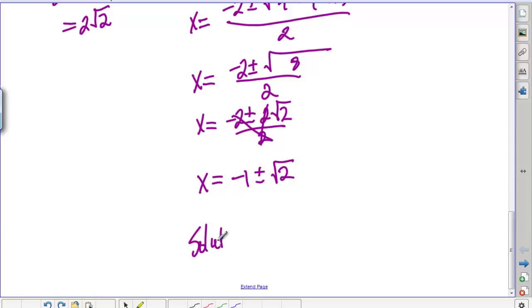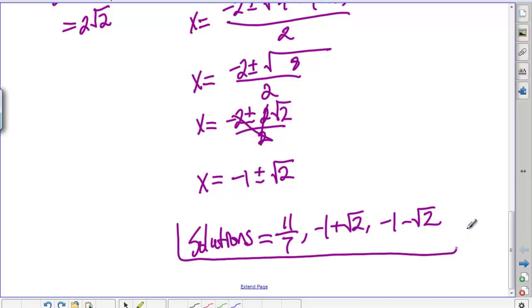So our solutions then, we had 11 over 7 as one solution, that was that first one we got, and then here's our other 2 solutions: negative 1 plus or minus square root of 2. That's how you would work that one. It's a little bit harder because of that quadratic formula that you have to use, and also just not really nice numbers to work with, 11 over 7 and so on. But hopefully that makes sense, and just know that you might have to use the quadratic formula to get those solutions. If you have other questions, by all means, please let me know.